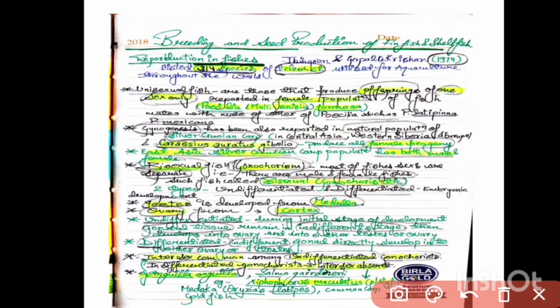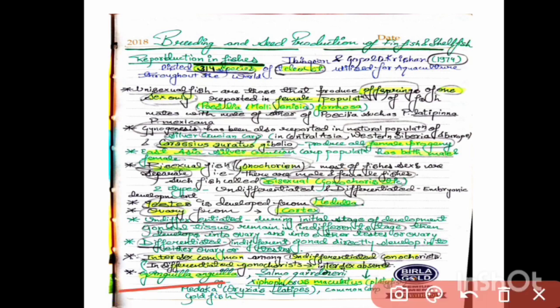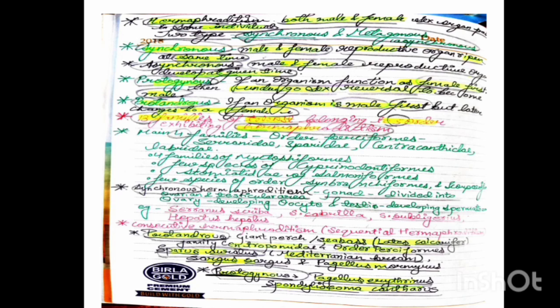Intersex is absent in Xiphophorus maculatus, which is the platyfish — an example of differentiated gonadism — whereas undifferentiated gonadism is seen in Anguilla anguilla. Next is hermaphroditism, in which both male and female sex organs are present in the same individual.